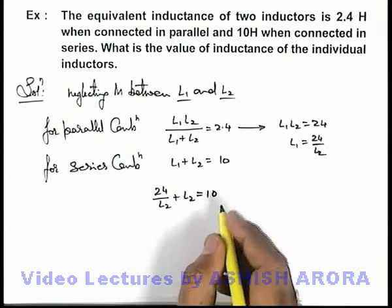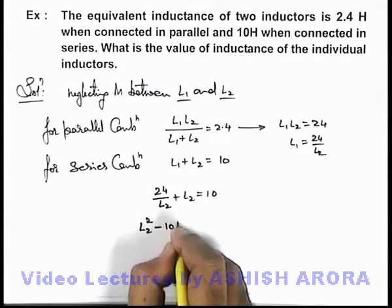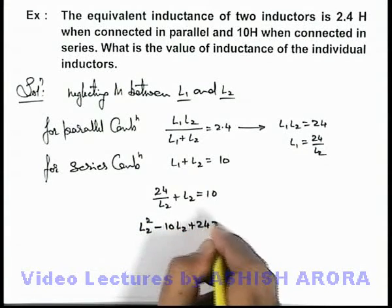So on further simplifying, we are getting it as L2 square minus 10*L2 plus 24 is equal to zero.